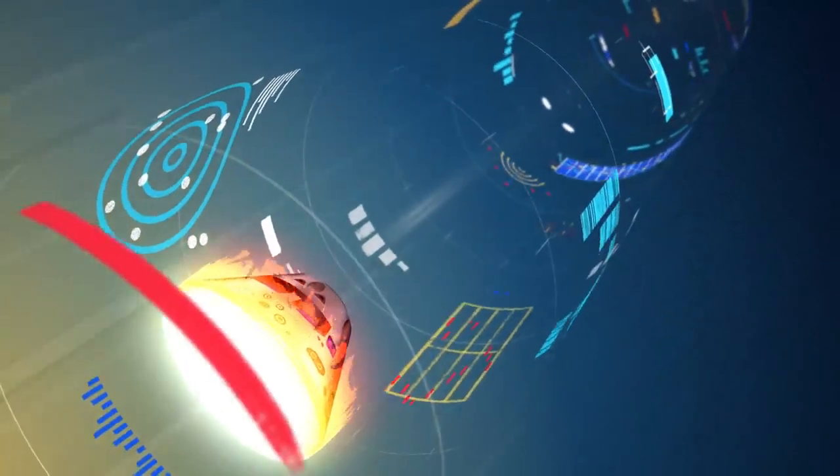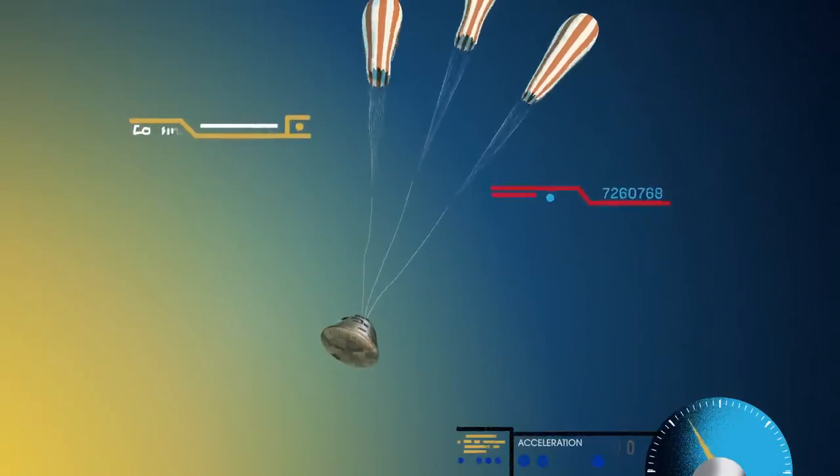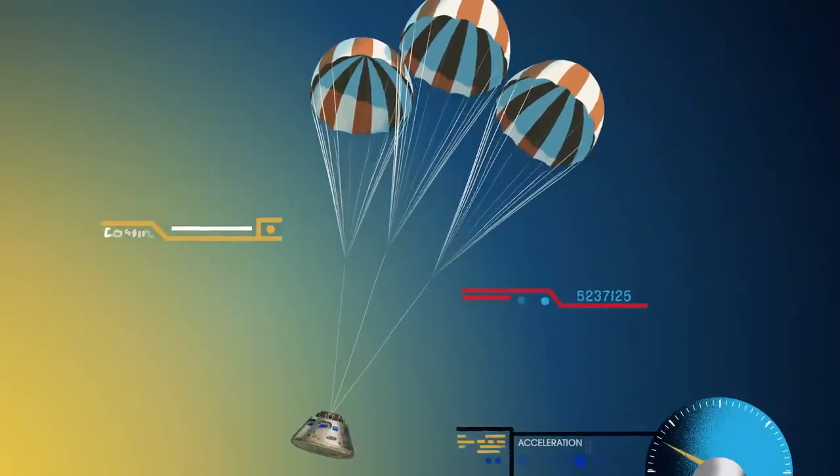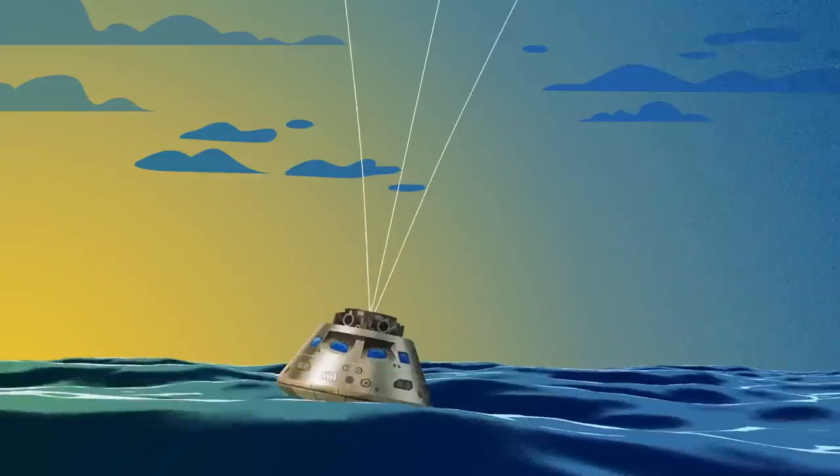With the Orion now at just 300 miles per hour, a series of parachutes uniquely tested and produced for this moment deploy, decelerating the craft to just 20 miles per hour for splashdown.